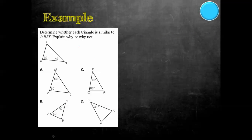For this one, determine whether each triangle is similar to triangle RST and explain why or why not. Triangle RST is given two angles, so we know we're going to use the angle-angle similarity postulate since we're not given any other information. Looking at the first comparison triangle, we're given 80 and 50. We take 80 plus 50, which is 130, then subtract from 180 to get 50 degrees.